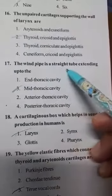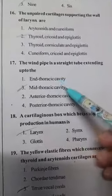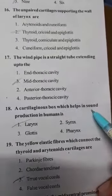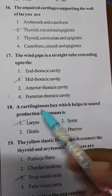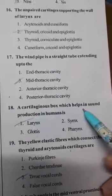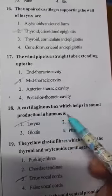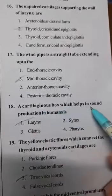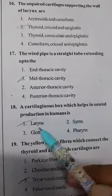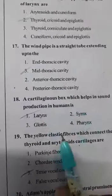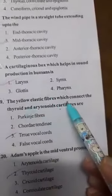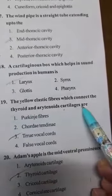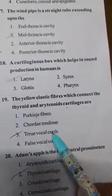The windpipe is a straight tube extending up to the mid-thoracic cavity. A cartilaginous box which helps in sound production in humans is the larynx. The yellow elastic fibers which connect the thyroid and arytenoid cartilages are the true vocal cords.